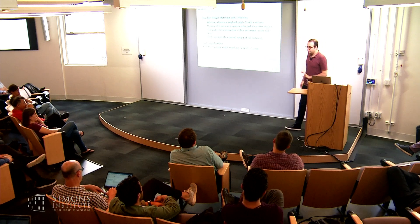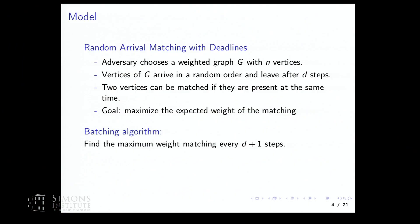I'm going to look at a very simple algorithm for matching these vertices — we call it the batching algorithm. The way it works is you wait for D steps; as soon as the very first vertex is about to leave, you look at your market and find the maximum weight matching there — essentially you try to clear the market. Then you wait another D plus one steps, look at who else is present, match those, and keep repeating. That's the batching algorithm.